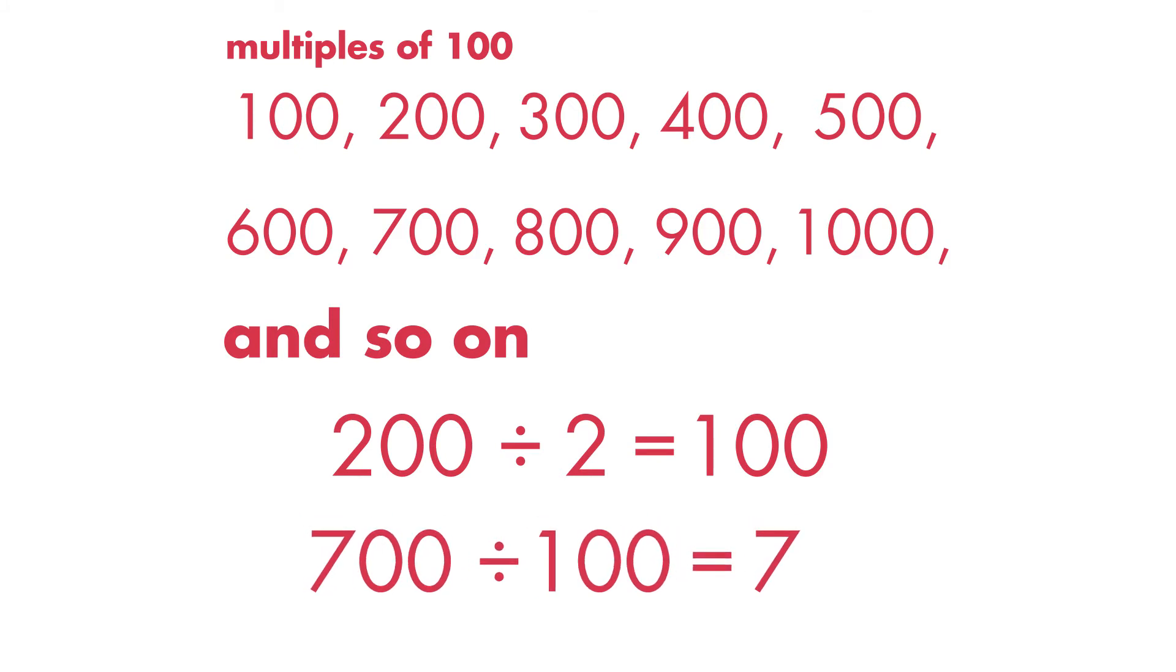700 divided by 100 is equal to 7, so 700 is a multiple of 100.